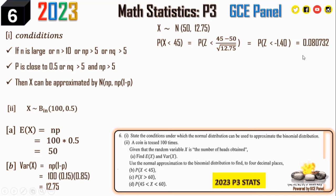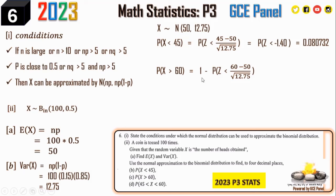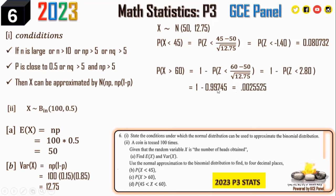P(X > 60) = 1 − P(X < 60) = 1 − P(Z < (60−50)/√25) = 1 − P(Z < 2.00). From tables P(Z < 2.00) = 0.9772, so P(X > 60) = 0.0228 (to 4 d.p.).